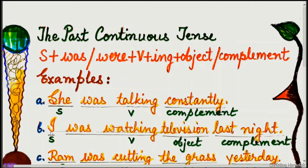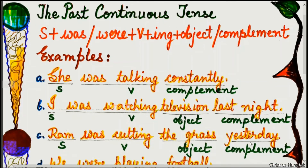Example B: I was watching television last night. 'I' is the subject, 'was watching' is the verb with additional -ing, 'television' is the object, and 'last night' is the complement.